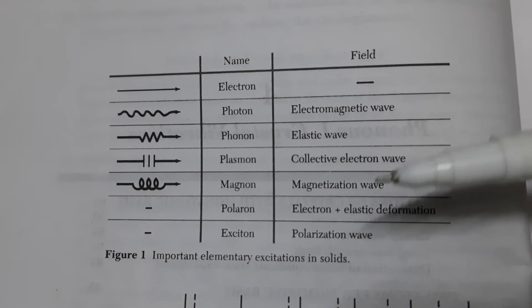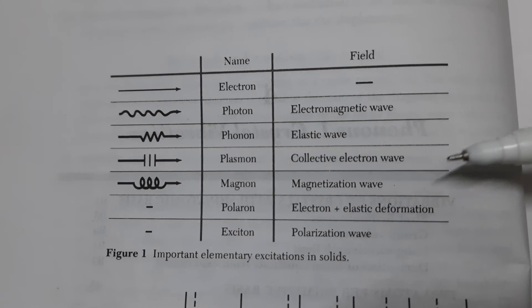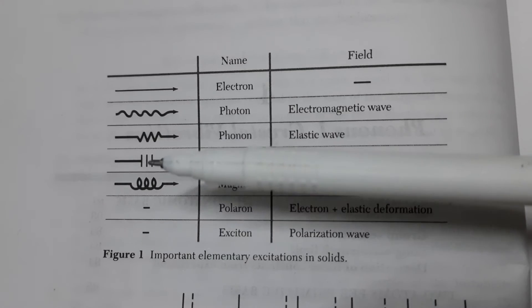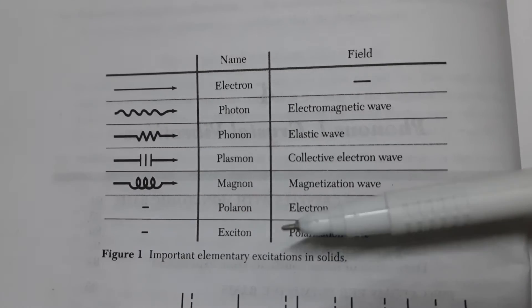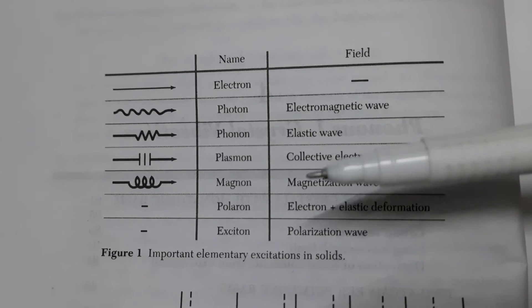Plasmon comes from collective electron wave and is denoted by this kind of symbol. Then magnon is the magnetization wave which is also denoted by this kind of symbol.